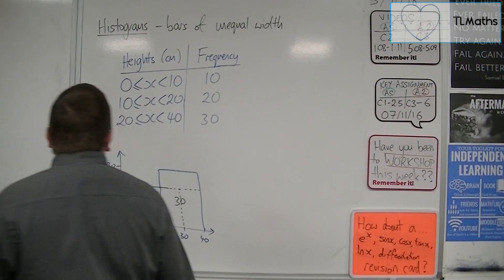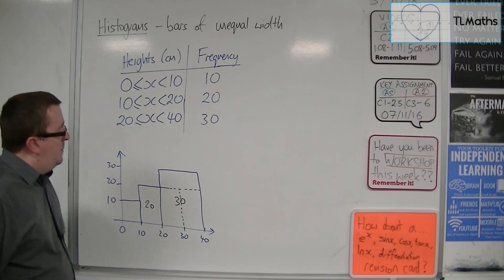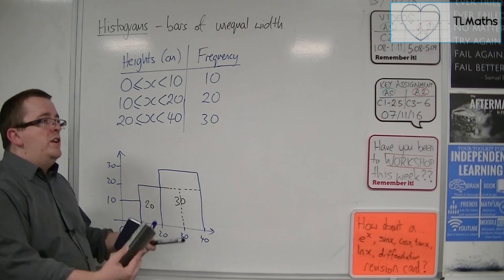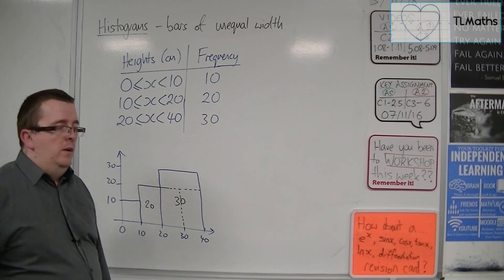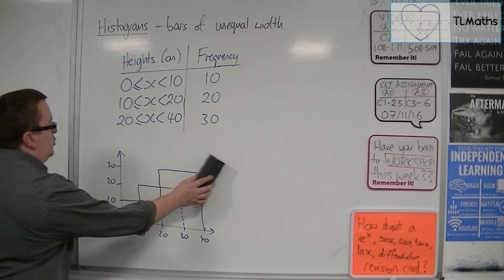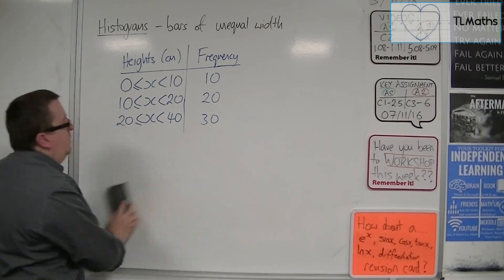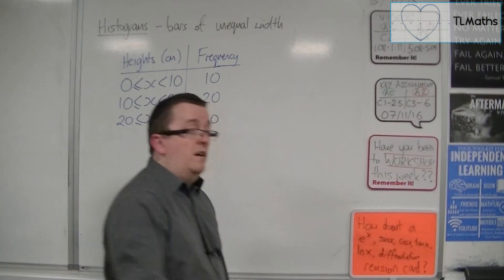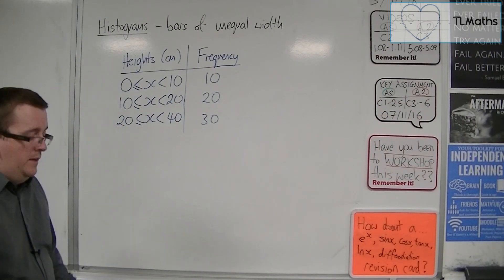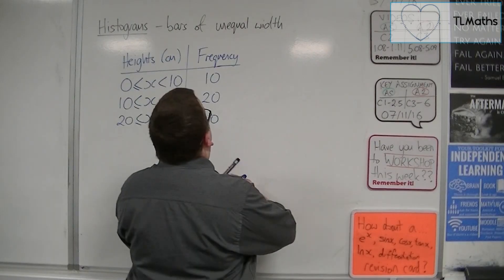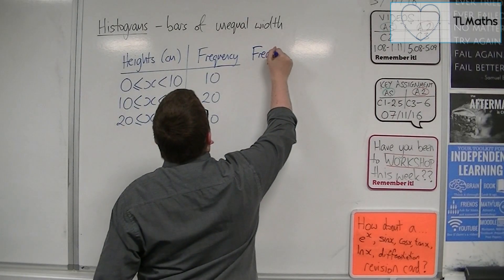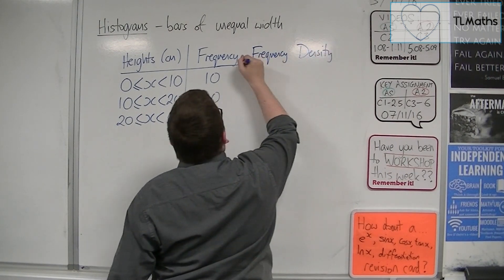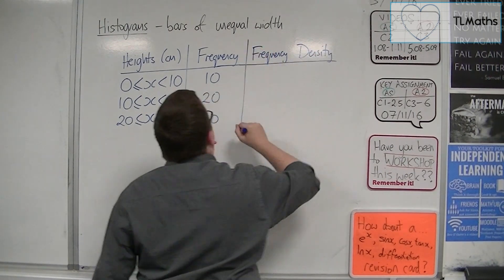So we've got to come up with some way so that the bars have area that is proportional. The bars need to be proportionally large. So that means that we've got to have something else on our y-axis. We can't have frequency anymore. So that's why we look at frequency density.